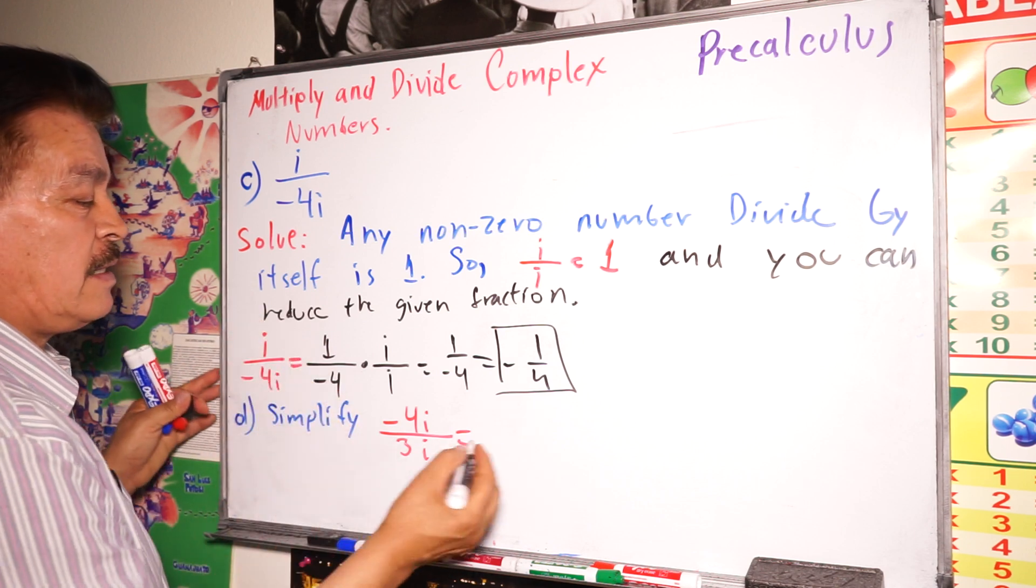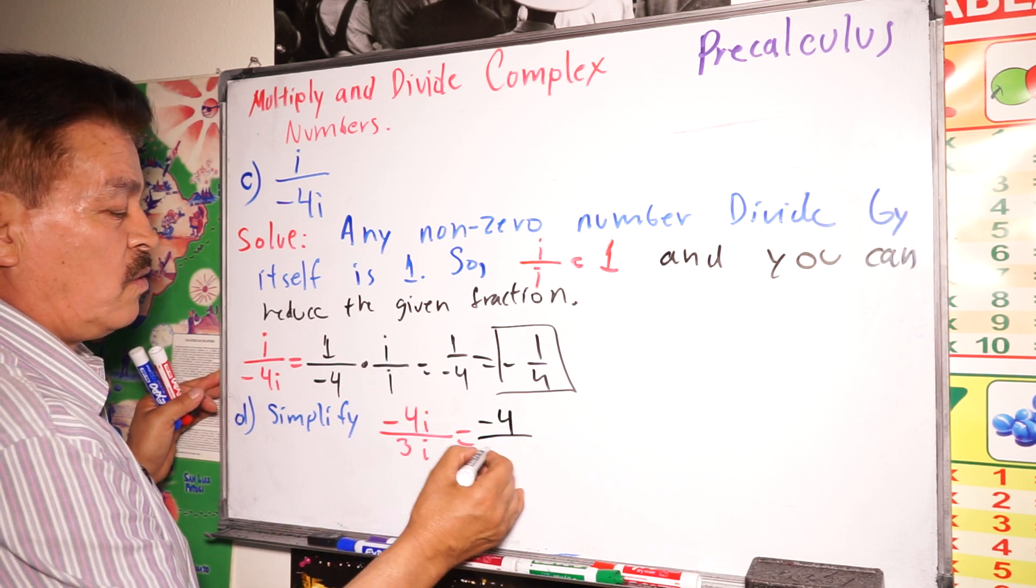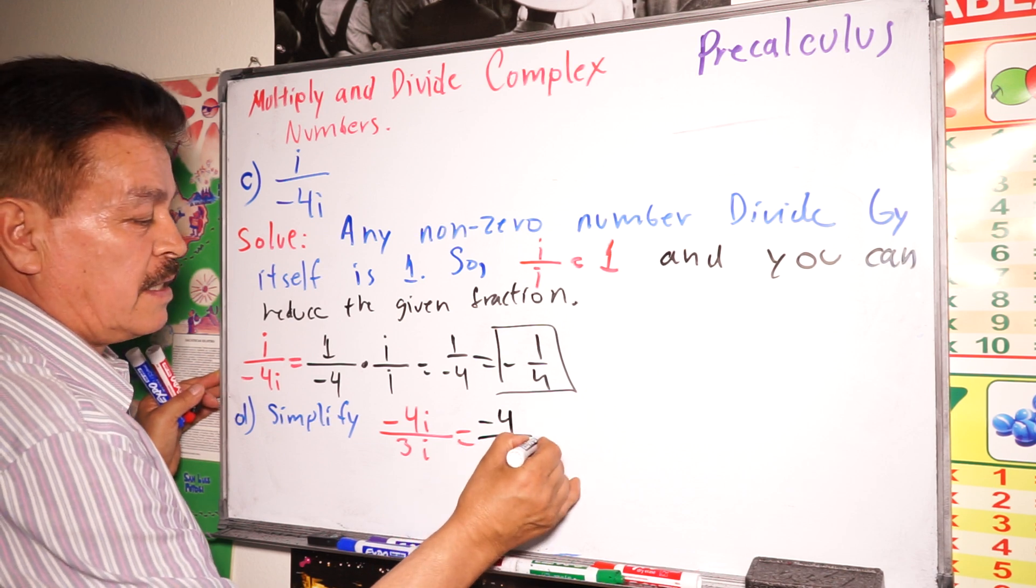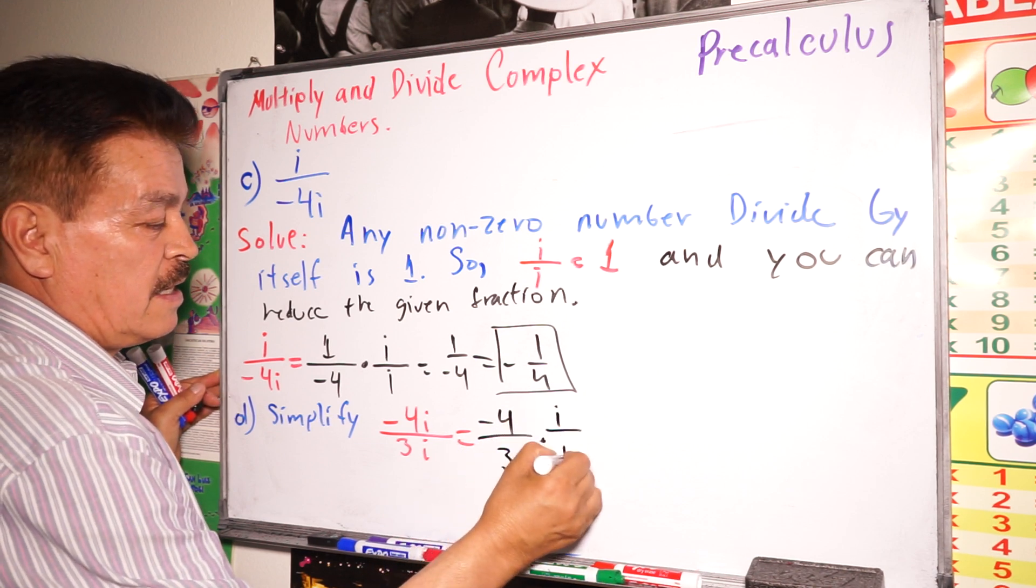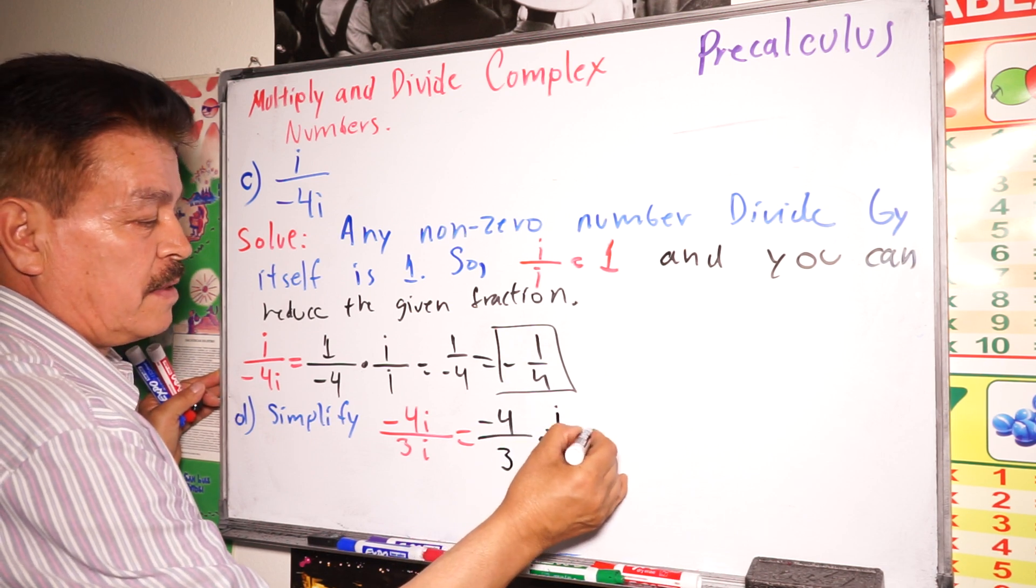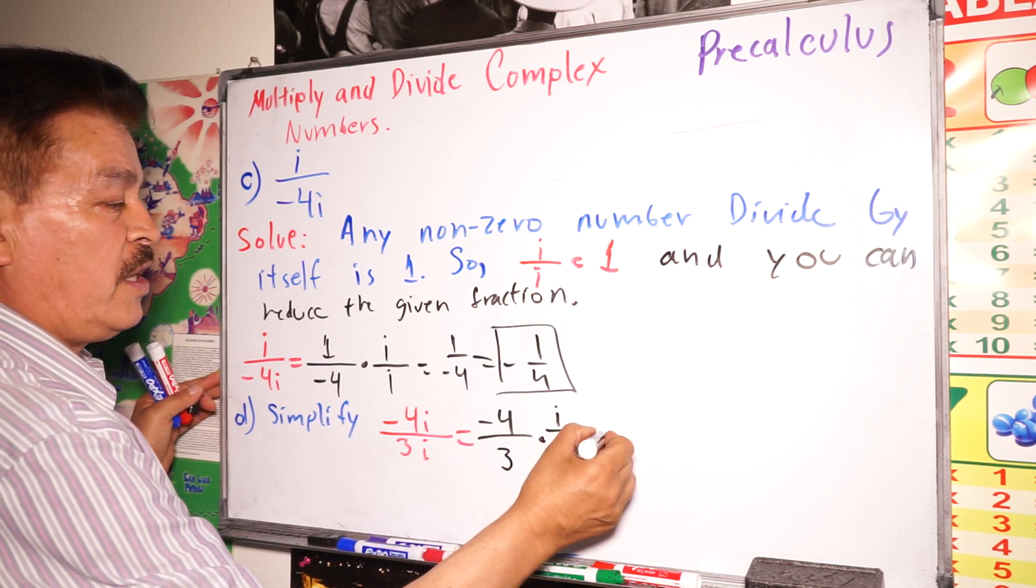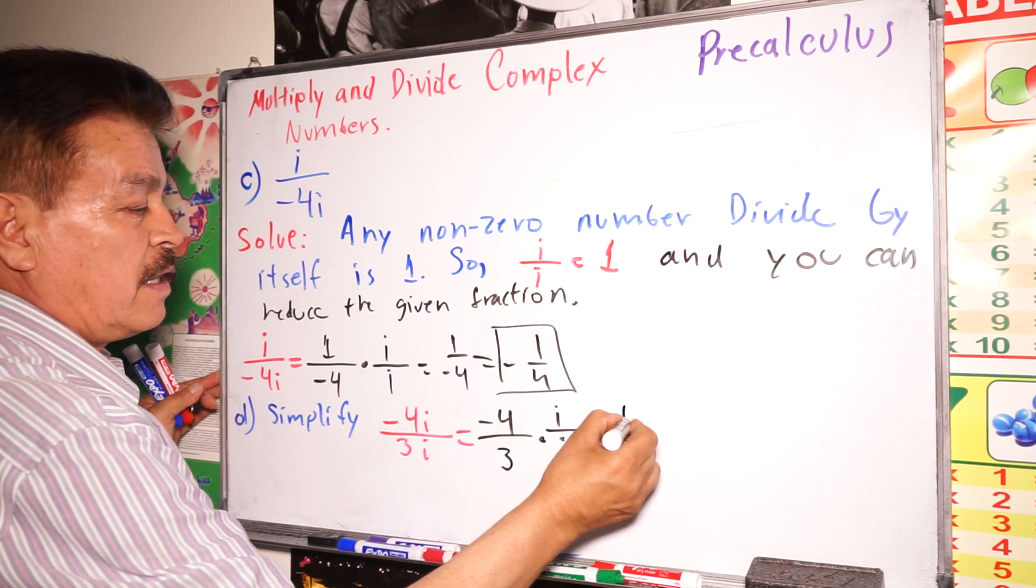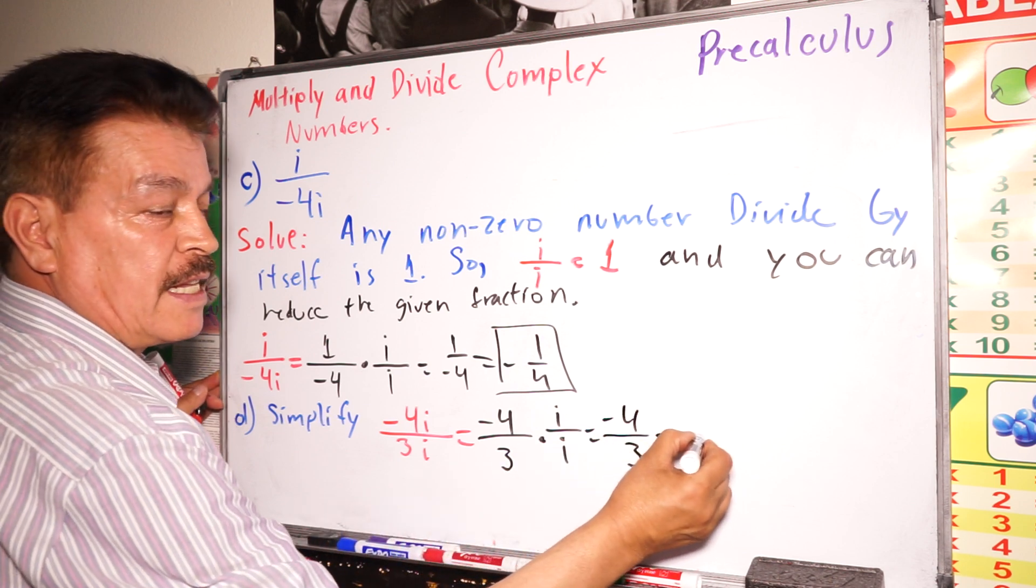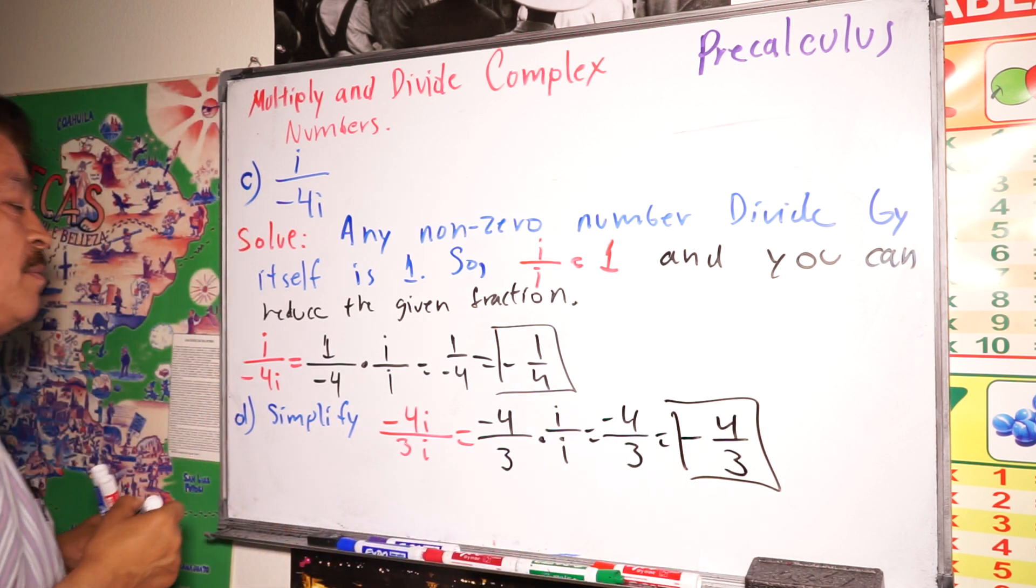It's simple again. This class is very easy. It's a precalculus class. Negative 4 divided by 3 times i, times i, i divided by i. Remember, this rule equals 1. Here, we have negative 4 divided by positive 3. The answer is negative 4 thirds.